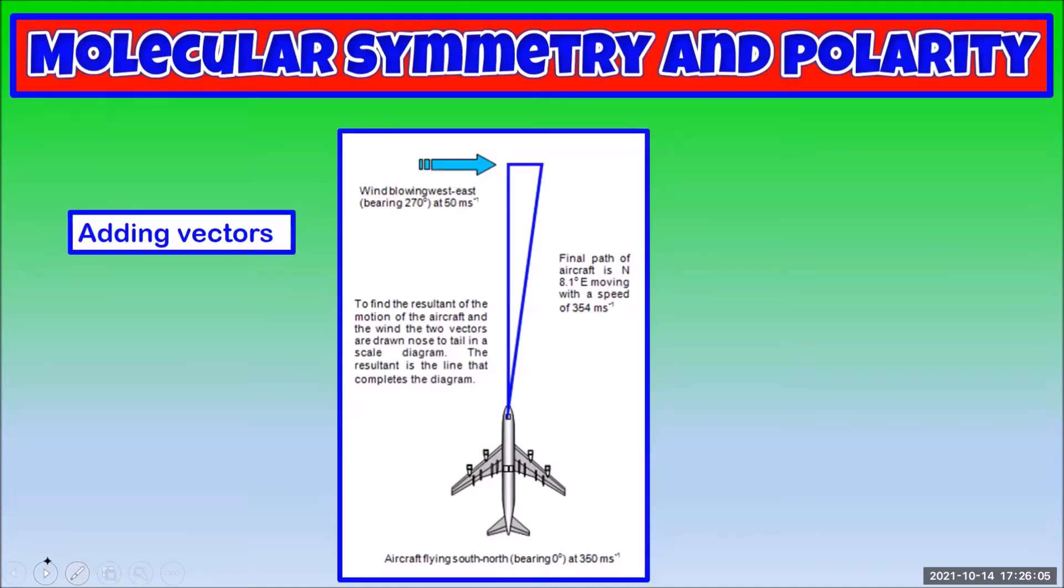If you're not very familiar with adding vectors, we can think of a more realistic example. A plane is flying north and the wind is blowing toward the east. Which way will the plane end up going? Well, the wind will blow it off course, so it will end up going a little bit towards northeast. Exactly how far will depend on the plane's speed and the wind speed.